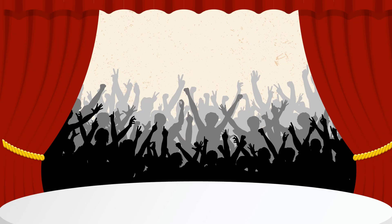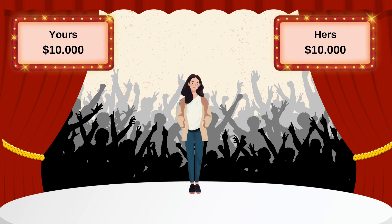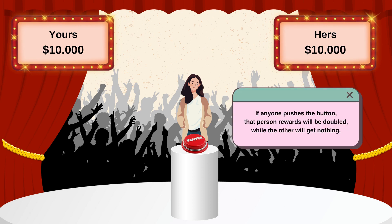Imagine you're on a game show with a friend. You can both easily win $10,000. But there's a twist. There's a button. If the button is left untouched within 10 minutes, each of you will win $10,000. But if any of you push the button first, they will get $20,000 while the other will get nothing. So, what would you do?